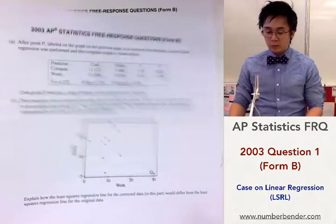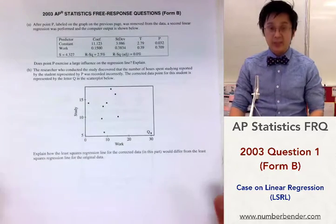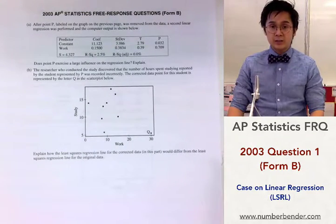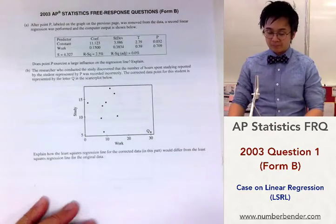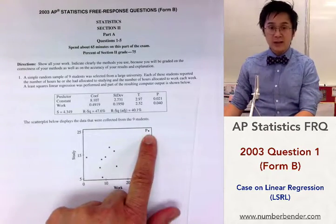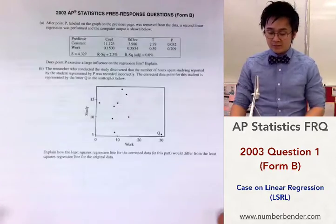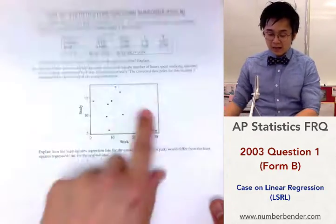And we're going to write out our justification as to how influential that point is. So in this particular problem, we can start by writing out the linear regression, or the y-hat for the previous LSRL with p, and the y-hat without the p.